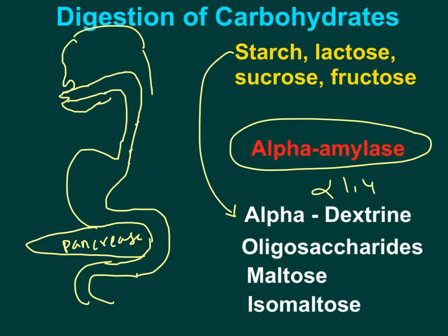After mastication, when we swallow food, the stomach will contain alpha dextrin, lactose, fructose, and sucrose. There is no digestion of carbohydrates in the stomach because the stomach does not release any carbohydrate digestive enzyme. Also note that salivary alpha amylase that enters the stomach is denatured by the acidic pH there.